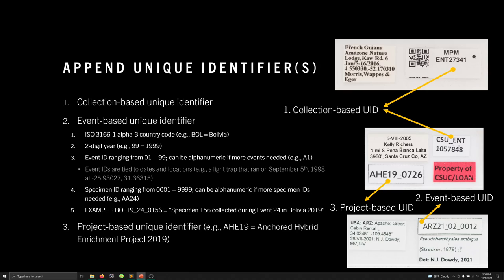The first type are collection-based unique identifiers. Here are a few examples from the Milwaukee Public Museum as well as the Colorado State University Museum, where they're given some code that denotes the collection and then usually a long string of digits that is unique to that specimen only in that collection.